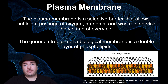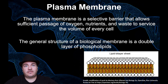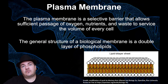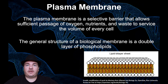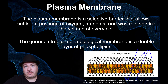Plasma membranes are the barrier and boundary of the cell, but things have to be able to get into and out of the cell. The cell needs energy, food, and oxygen to come in, and it has to get rid of waste products like carbon dioxide. The only way for stuff to get into or out of the cell is by crossing this phospholipid bilayer — the plasma membrane.